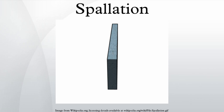Spallation in solid mechanics can occur when a tensile stress wave propagates through a material, and can be observed in flat plate impact tests. It is caused by an internal cavitation due to stresses which are generated by the interaction of stress waves exceeding the local tensile strength of materials.